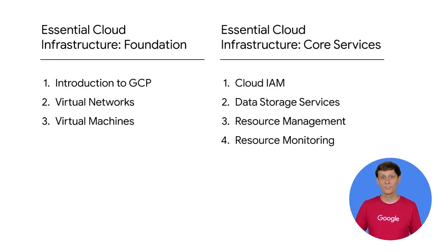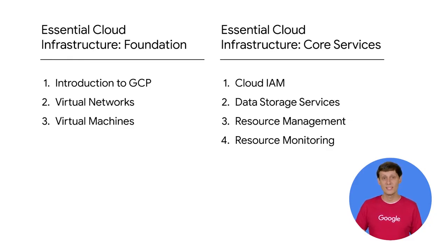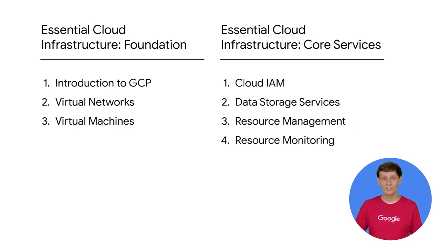Essential Cloud Infrastructure Core Services is the second course of this series. In that course, we start by talking about Cloud IAM, and you will administer identity and access management for resources. Next, we'll cover the different data storage services in GCP, and you will implement some of those services. Then we'll go over resource management, where you will manage and examine billing of GCP resources. Lastly, we'll talk about resource monitoring, and you will monitor GCP resources using Stackdriver Services.